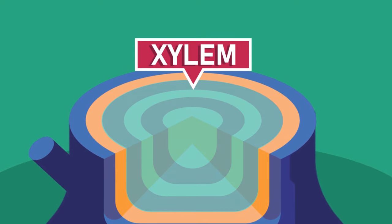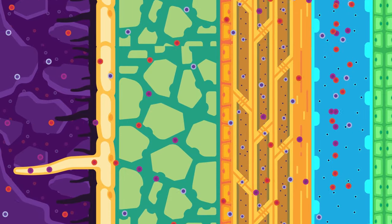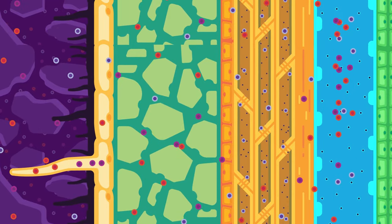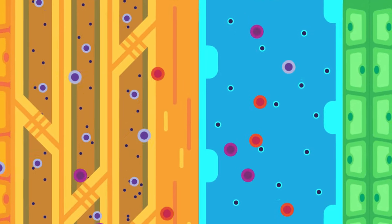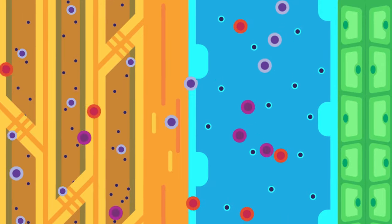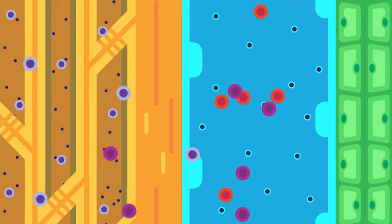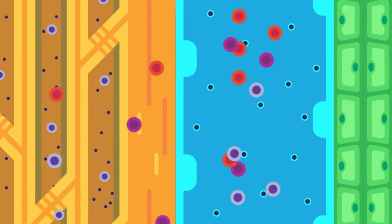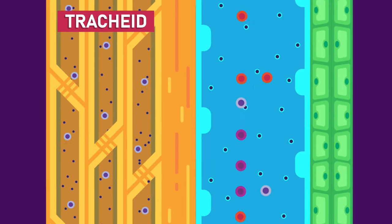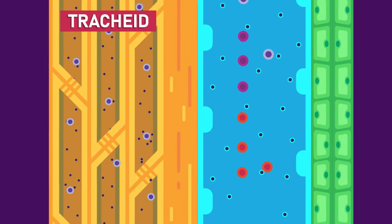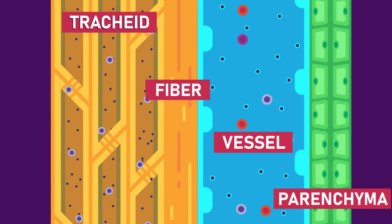Xylem. Xylem is responsible for distributing water and minerals taken by the roots. An interesting fact about xylem is that some parts of it do not have protoplasms or cell walls, allowing water and minerals to pass easily. Xylem consists of tracheids, or conducting cells, vessels, fibre, and parenchyma.